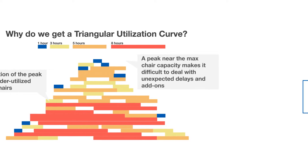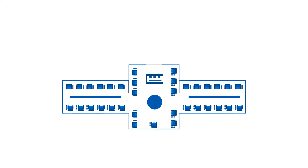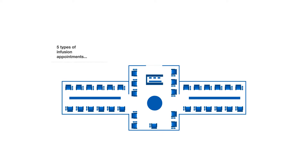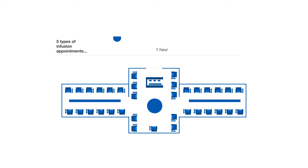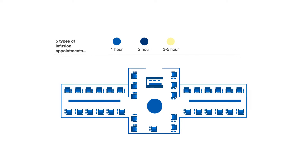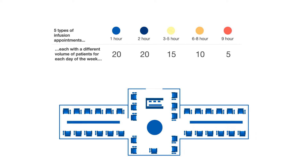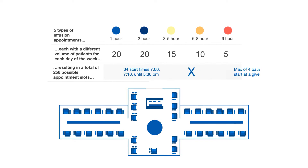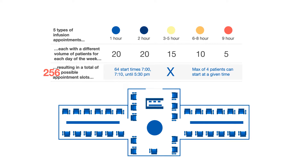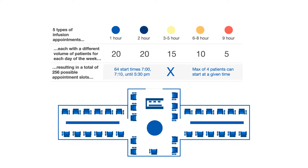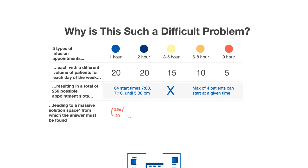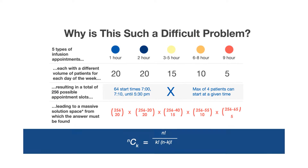Let's take a 35-chair infusion center that operates 8 hours per day, treating 5 types of appointments: 1 hour, 2 hours, 3–5 hours, 6–8 hours, or 9 or more hours. Four sets of patients can start their treatment at 10-minute intervals. That's 256 possible start times, or slots, per day. What's the number of ways in which these patients can be started?